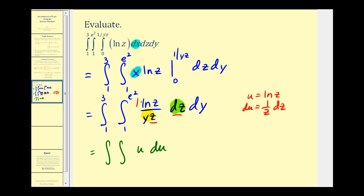However, we do still have this extra factor of y. When we integrate with respect to u, we'll treat y as a constant. We'll have u squared all over two times y. That'll be natural log z squared all over two y.